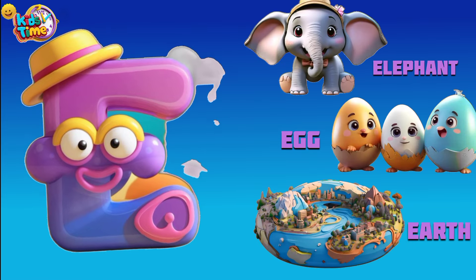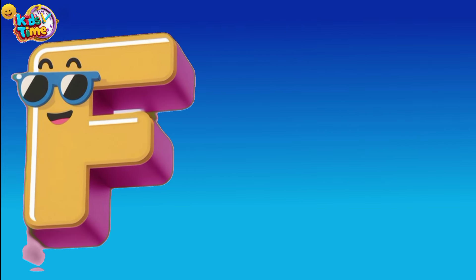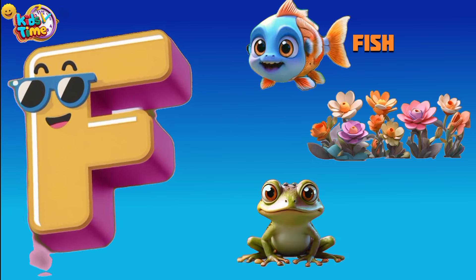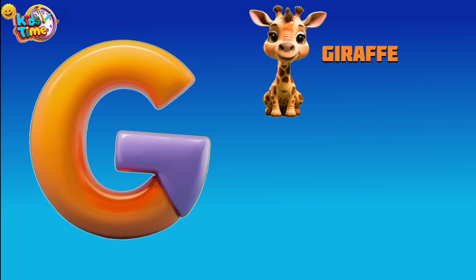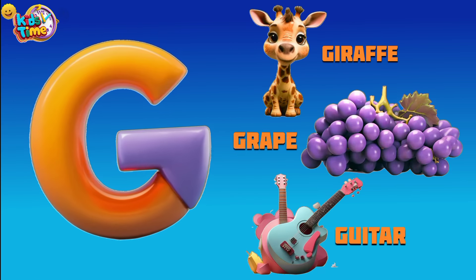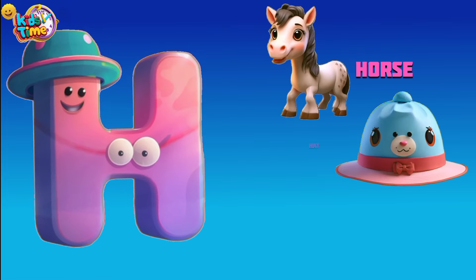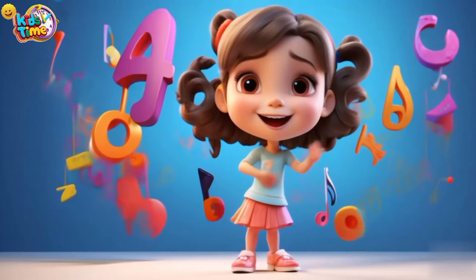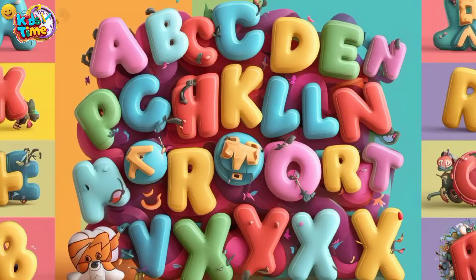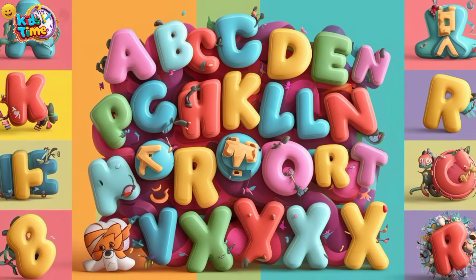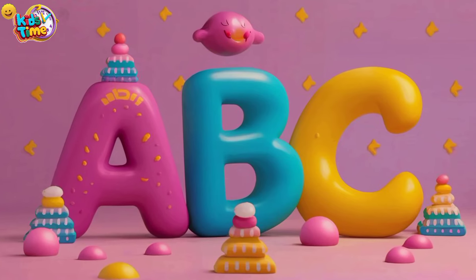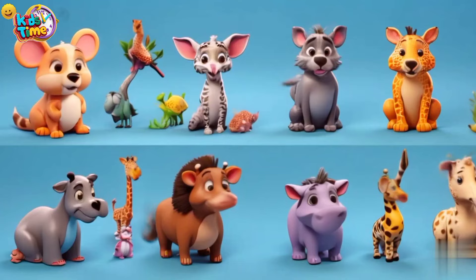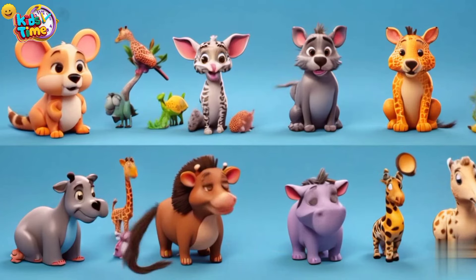E is for Elephant, Egg and Earth. F is for Fish, Flower and Frog. G is for Giraffe, Grape and Guitar. H is for Horse, Hat and Heart.